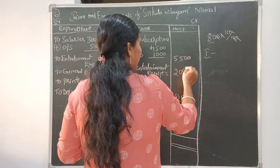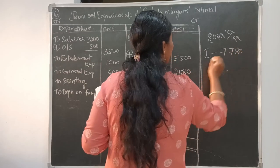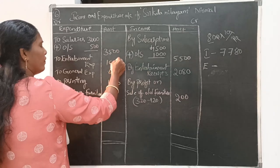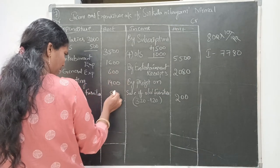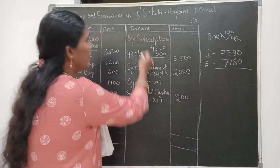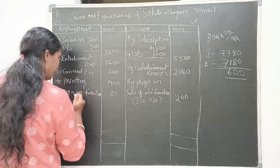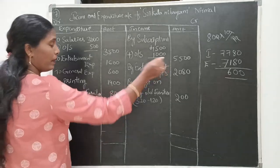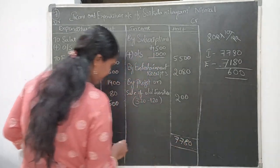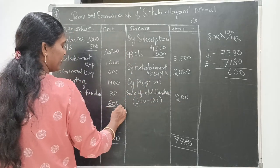Income side is more than the expenditure side. Income side totals: 5500 plus 2080 plus 200 gives 7780. Expenditure side: 3500, 1600, 600, 1400, 80 gives 7180. So income side total is 7780 and expenditure side is 7180. Income is more than expenditure, so we simply deduct: the surplus amount is 600. Write the highest amount 7780 on both sides.